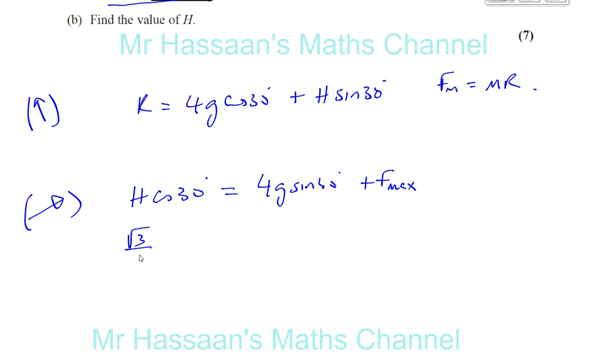So H cosine 30, that's like root 3 over 2 times H, equals 4G sine 30. Sine 30 is a half, that will be 2G, plus F max. Now F max I'm going to replace it with this. So this is R equals 4G cosine 30 is 4 times G times root 3 over 2, plus H over 2, which is 2G root 3 plus H over 2. That's what R is. So F max, and F max is mu R.